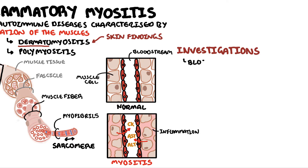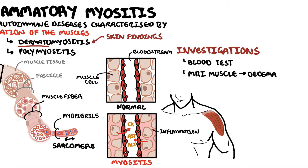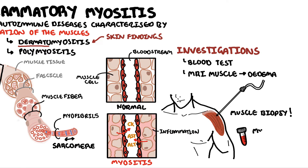Other diagnostic tests include an MRI — specifically MRI of the muscle — to help detect inflammation, which will show as muscle edema. The MRI scans can be used to help guide a muscle biopsy, which is the gold standard for diagnosing and differentiating between the different types. The presence of autoantibodies in the blood is another key diagnostic marker and helps support the diagnosis and differentiate between the different inflammatory myositis subtypes.